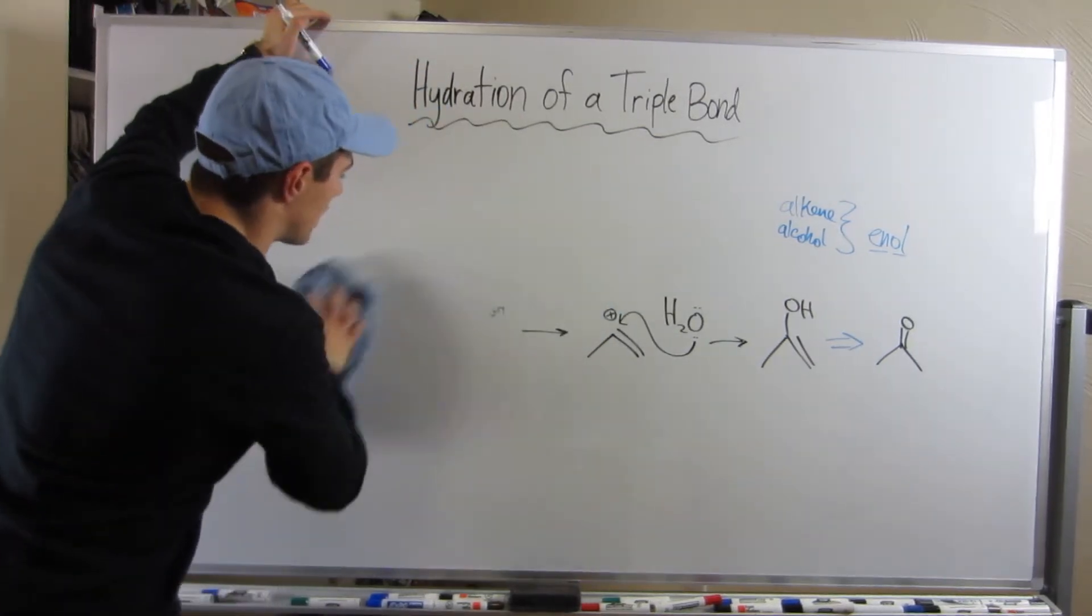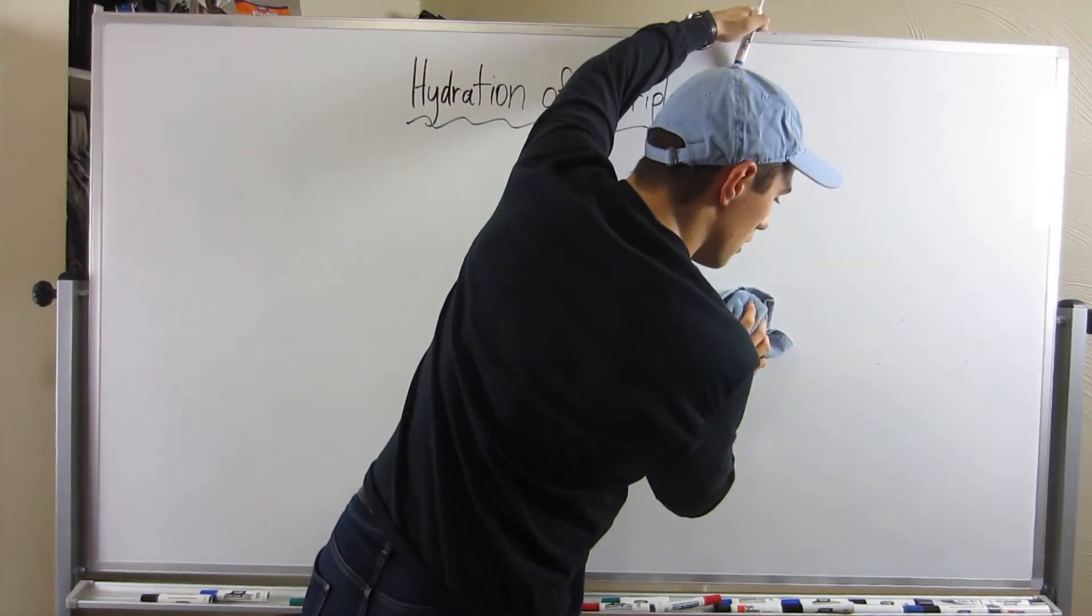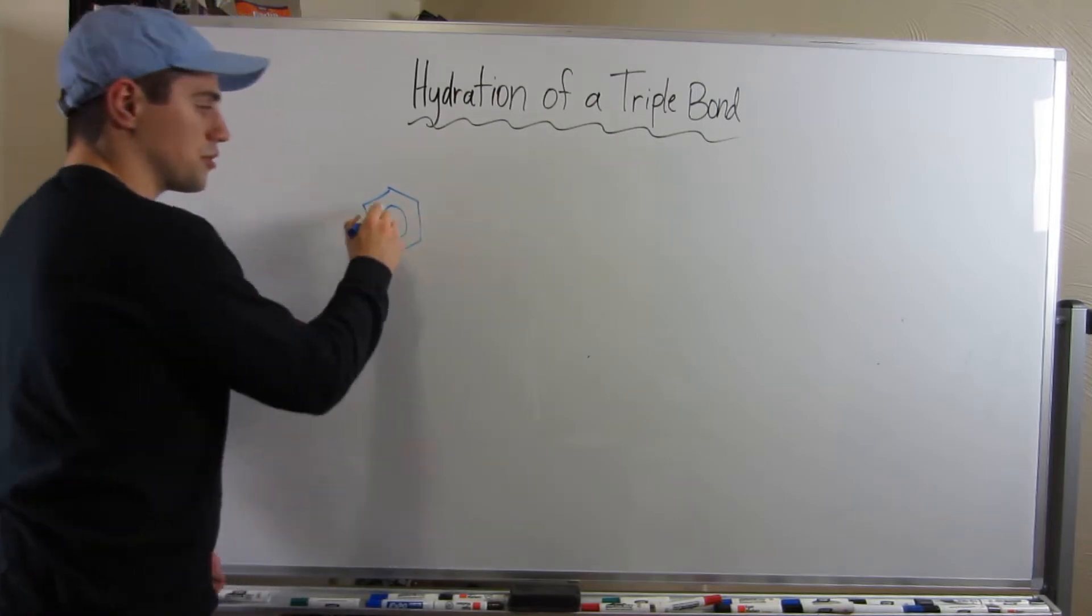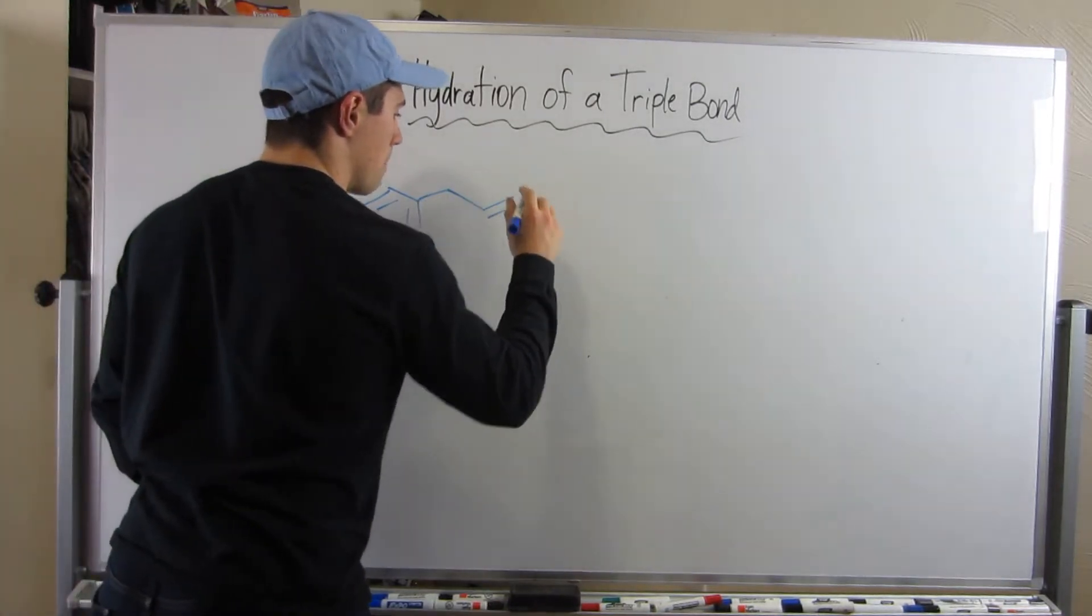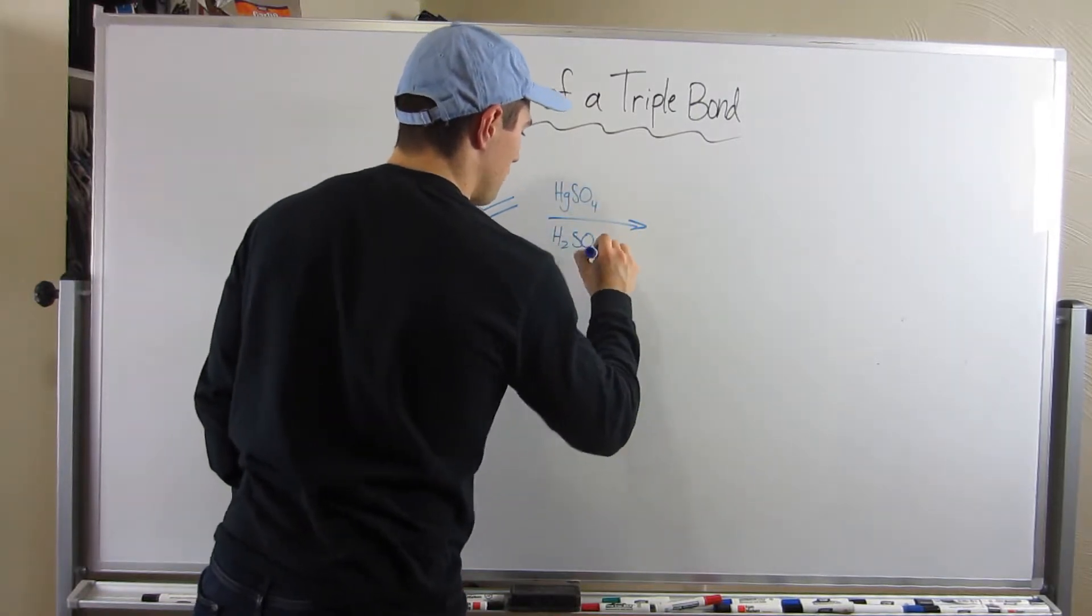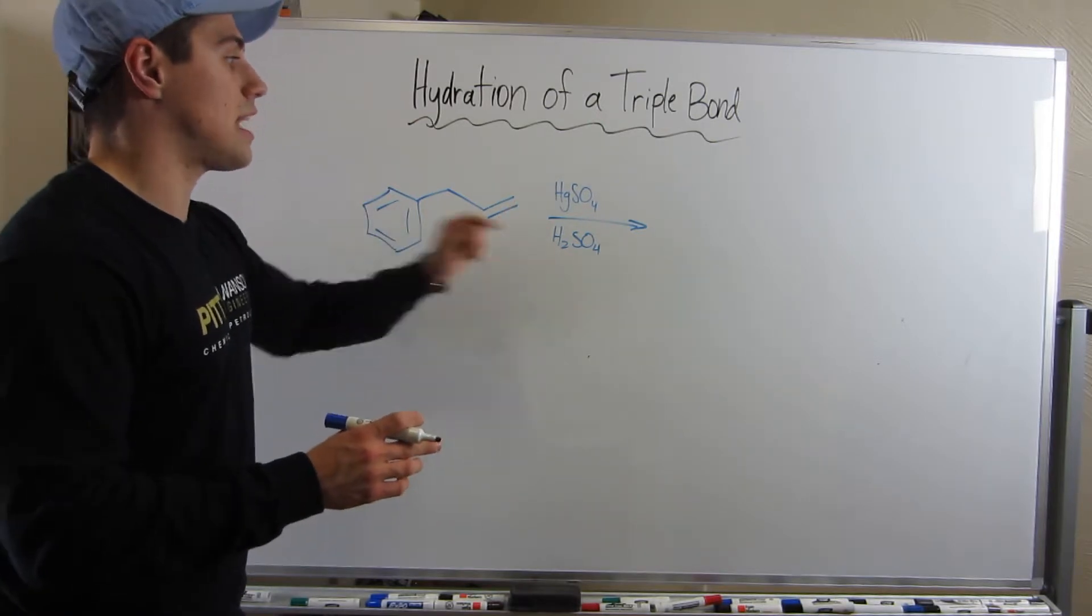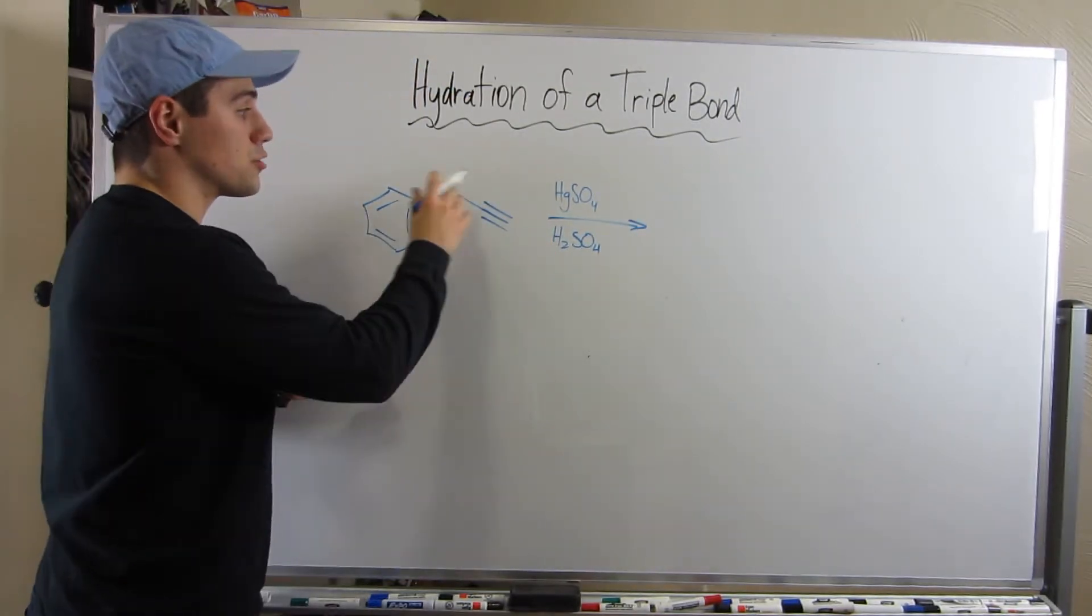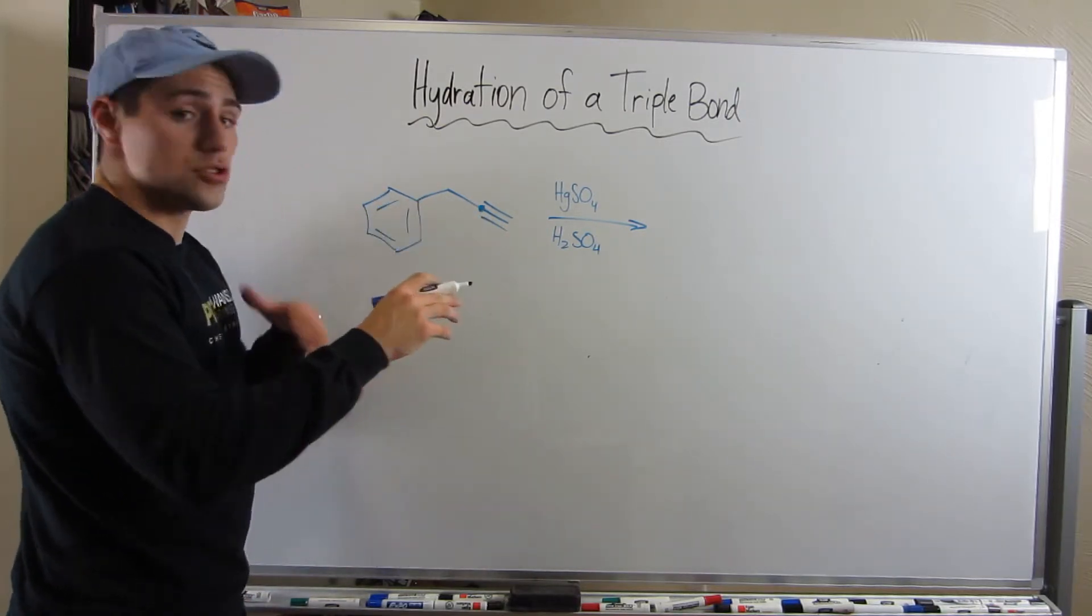let's look at something like this. If you saw this on a complete-the-reaction problem, you'd say, okay, I see I have a triple bond. Mercury sulfate, H2SO4. The triple bond's gonna hydrate, I'm gonna add an OH here, it's gonna go through that enol, and it's gonna flip to a carbonyl.